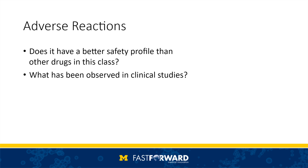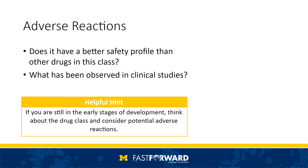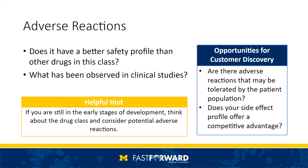Now let's take a look at adverse reactions. These may include skin conditions or gastrointestinal effects, for example. Are you expecting a better safety profile than other drugs in the same class? What have you already observed in clinical studies, if anything? If you do not yet know this information, look to the drug class for potential or common adverse reactions within the class. Be sure to ask your stakeholders whether there may be adverse reactions that would be tolerated by the patient population, and whether your side effect profile offers a competitive advantage.